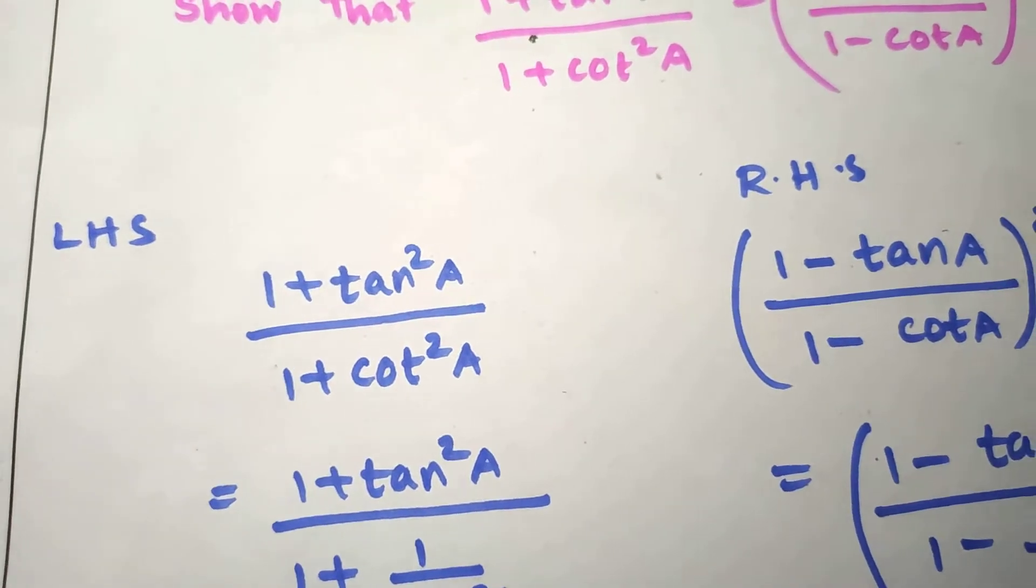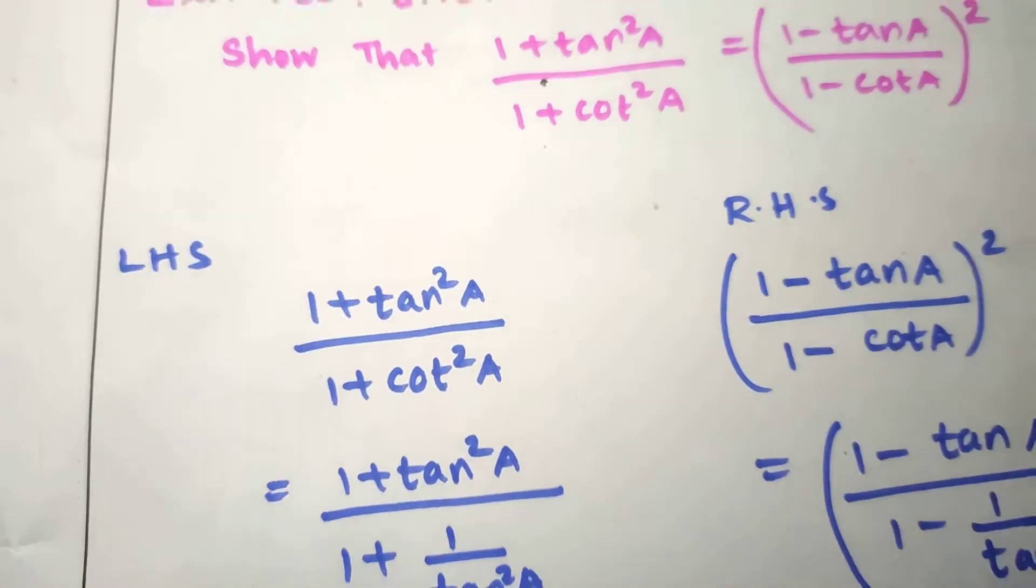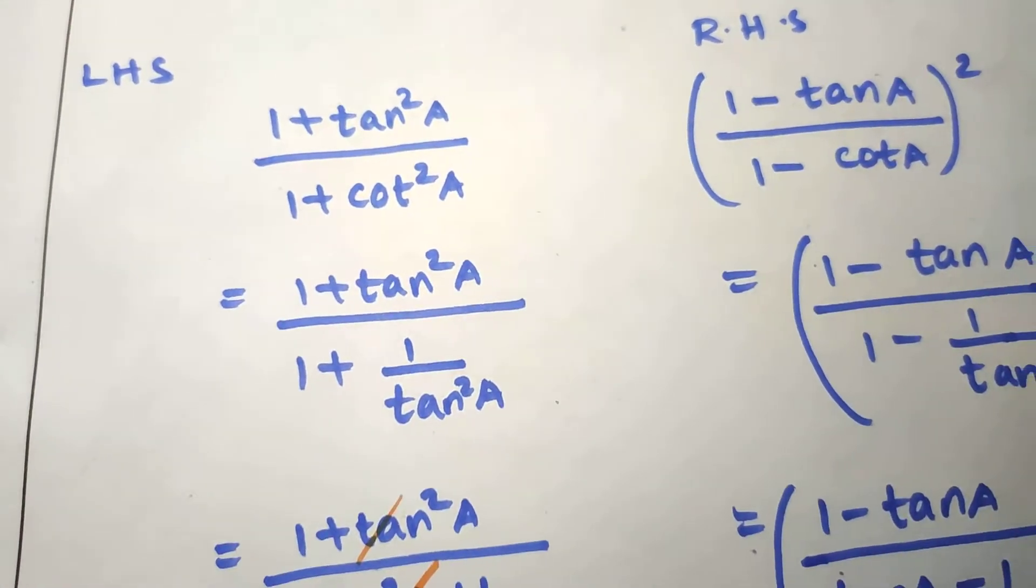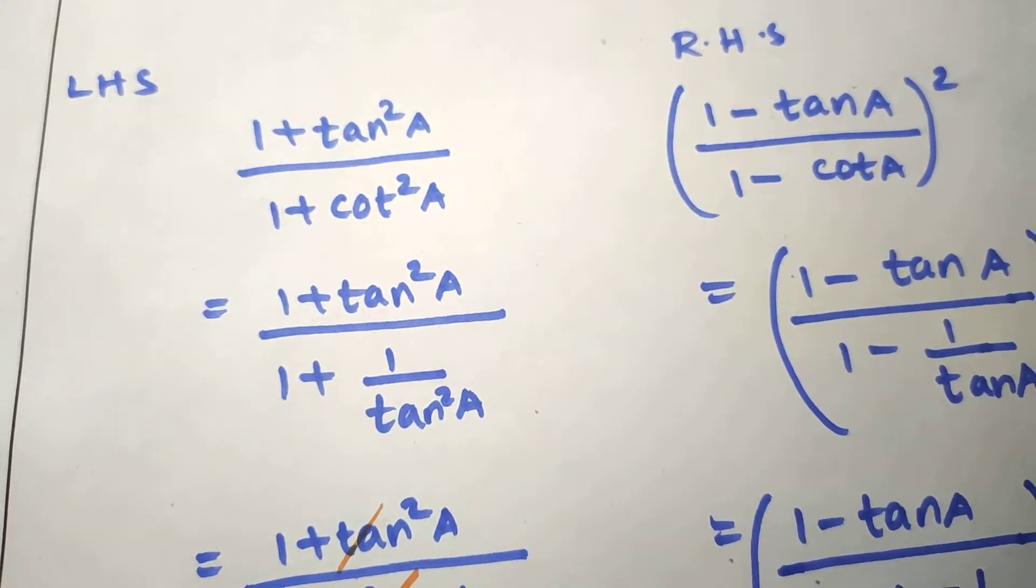So LHS is (1 + tan²A)/(1 + cot²A). In the denominator, cot²A equals 1/tan²A, so cot²A is 1/tan²A.